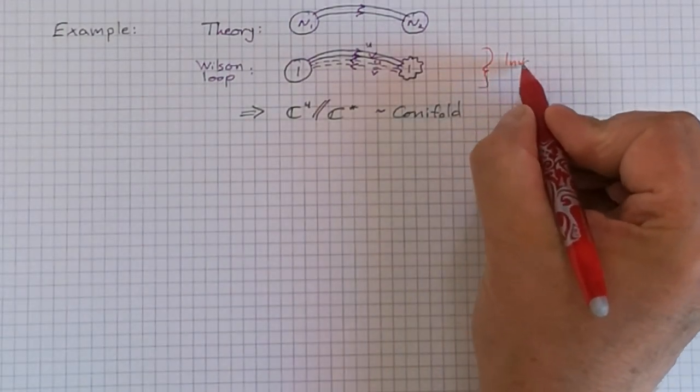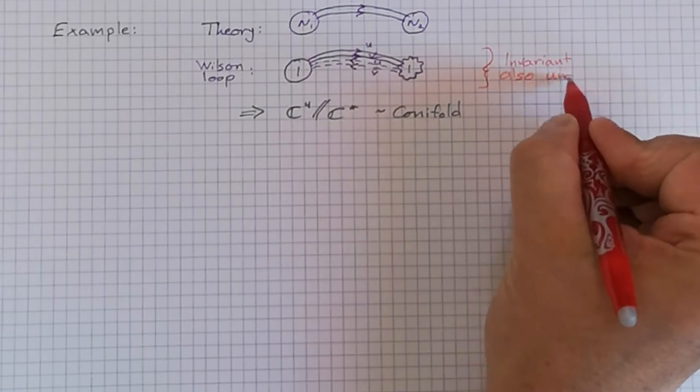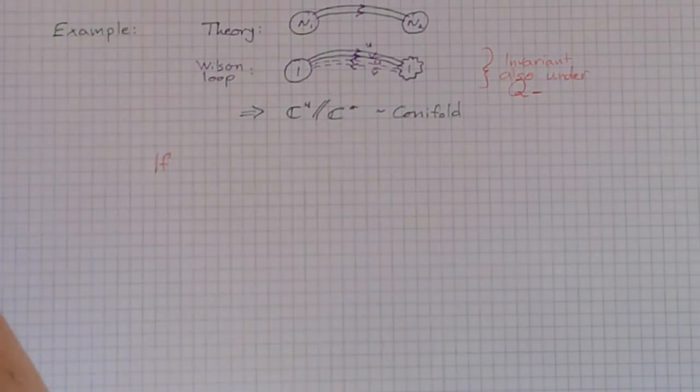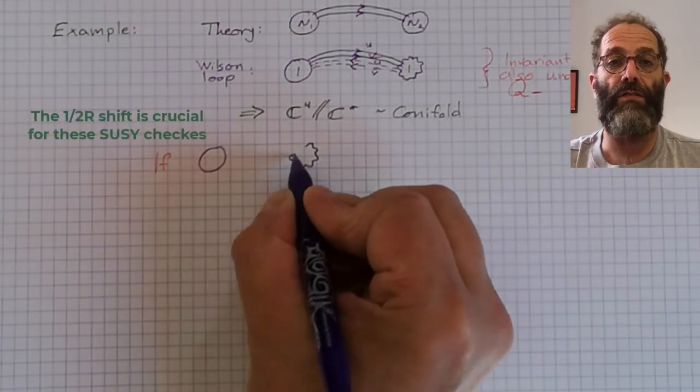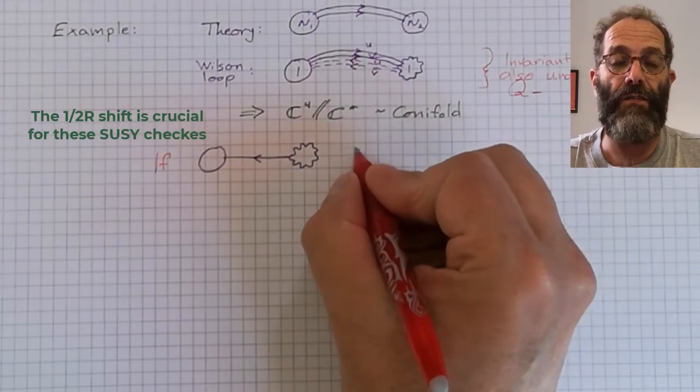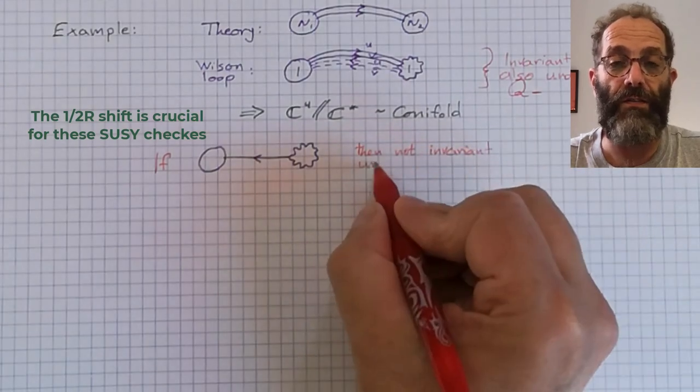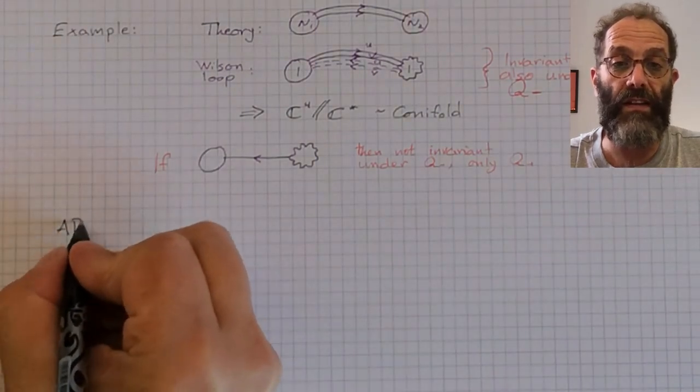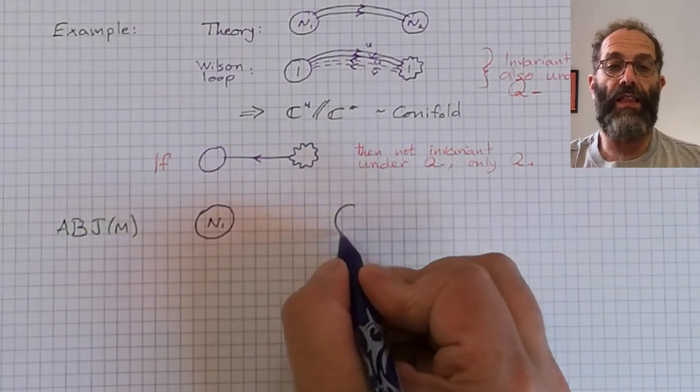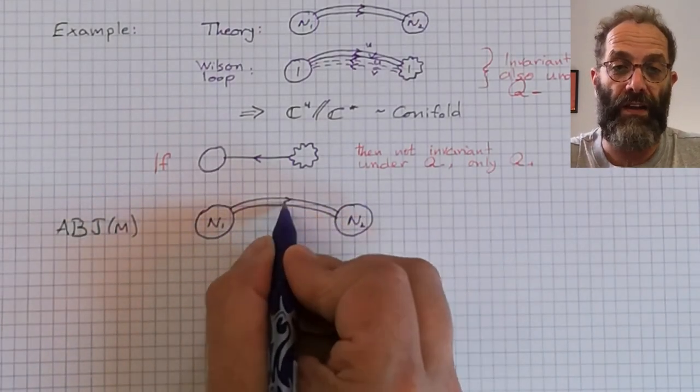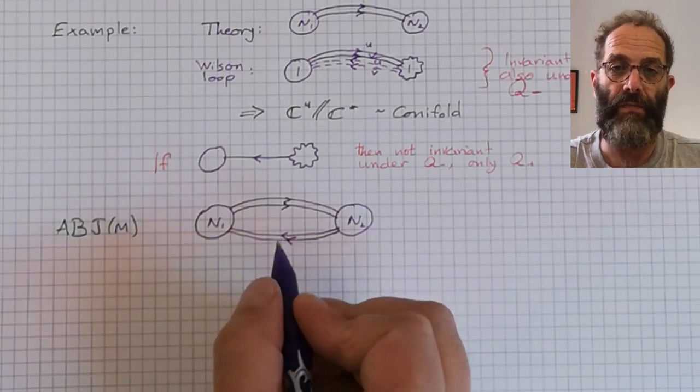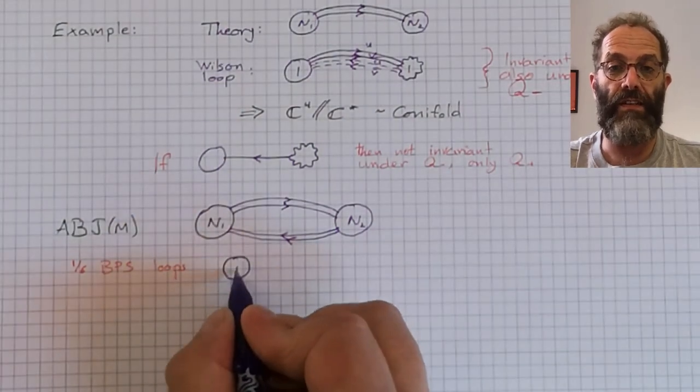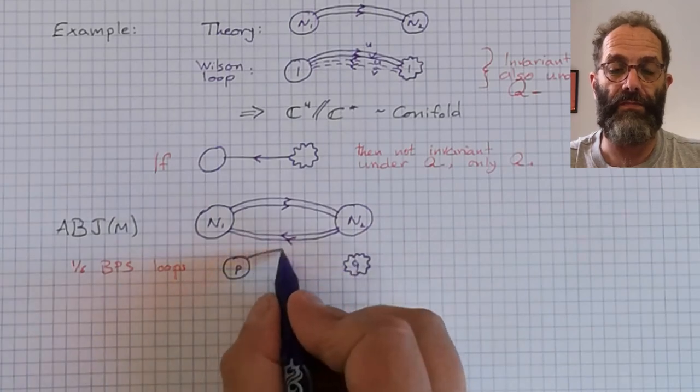The Wilson loops I described so far are invariant almost under the second supercharge q minus that the bosonic Wilson loop was invariant under, so they are one half BPS. The condition for that is that all the solid arrows point into the squiggly circles. If a solid arrow points out of the squiggly circle, you will not find invariants under q minus, just under q plus. Let me look then at another example of ABJM theory. Now the theory has four chiral fields, two in the bifundamental, two in the anti-bifundamental, and we have several choices of Wilson loops. So we can choose the right node to be shifted, indicated here by a squiggly circle, or we can choose the left one.